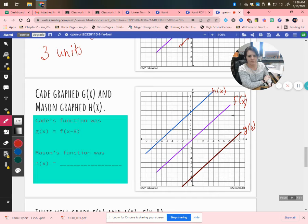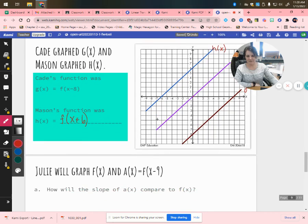So to write Mason's function, he took f(x). And it's a horizontal translation. And we got over here to negative 6. So we could say we subtracted negative 6, which means we added 6 units. And there's our function.